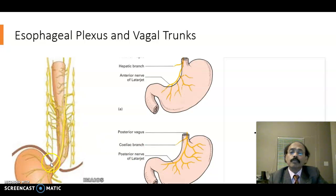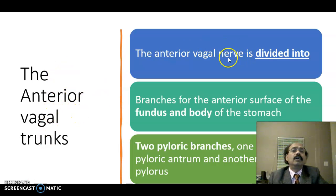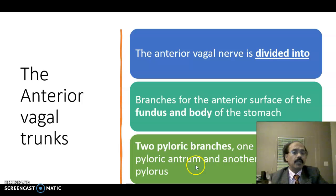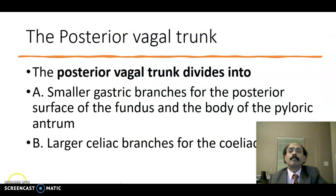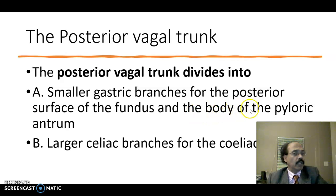The vagal trunks go to the abdomen through the esophageal opening of the diaphragm at the level of the T10 thoracic vertebra. The anterior vagal trunk divides into branches for the anterior surface of the fundus and body of the stomach, two pyloric branches — one for the pyloric entrance and another for the pylorus at the junction with the duodenum. The posterior vagal trunk divides into smaller gastric branches for the posterior surface of the fundus, body, and pyloric entrance, and larger celiac branches for the celiac plexus.